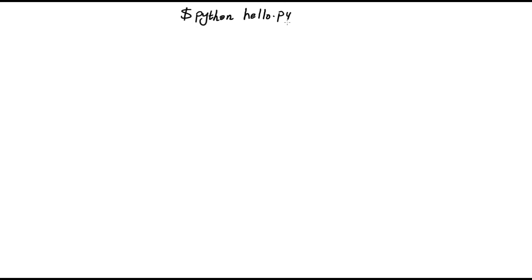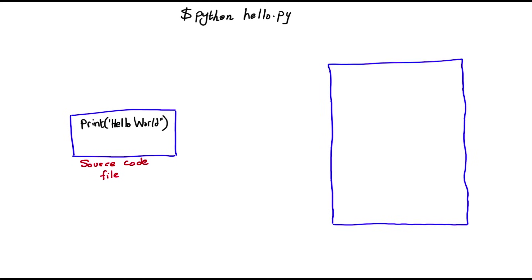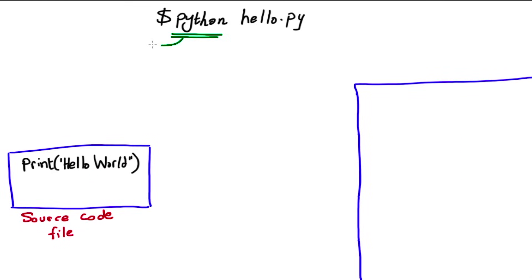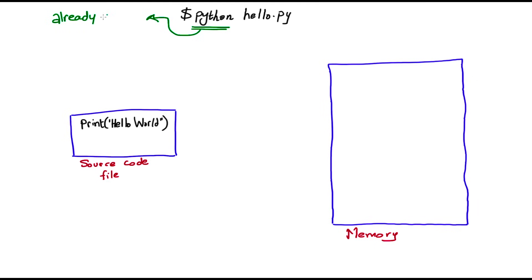Let's say we have a hello world program stored in a file called hello.py. To run it in your terminal, you say 'python' or 'python3' and then the filename. When you say 'python hello.py', the 'python' part is the Python interpreter, and the Python interpreter is already a binary. So the machine code loaded into memory is the code representing the Python interpreter itself — not the instructions representing your hello world source code. This is very important to understand.